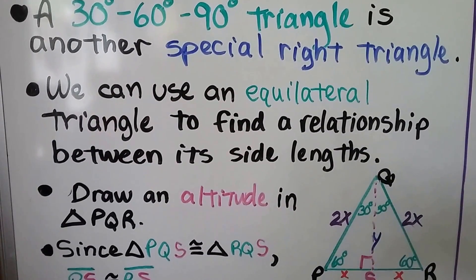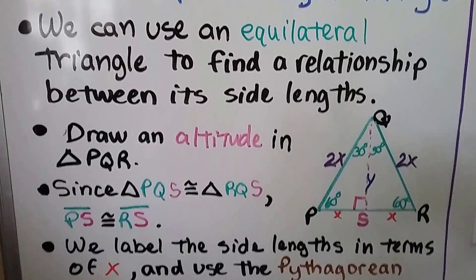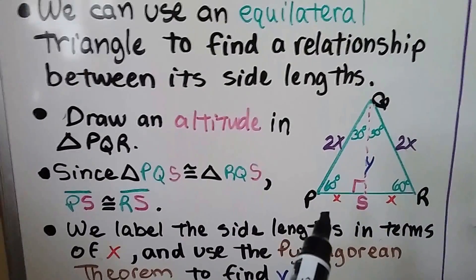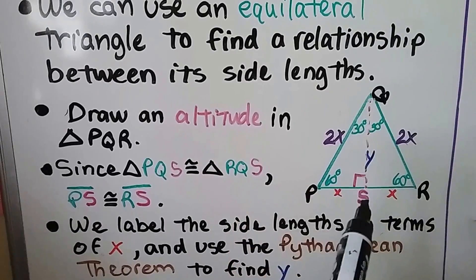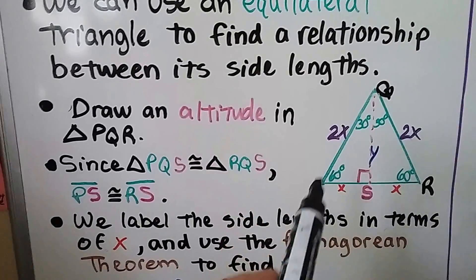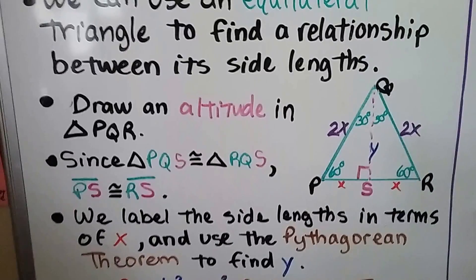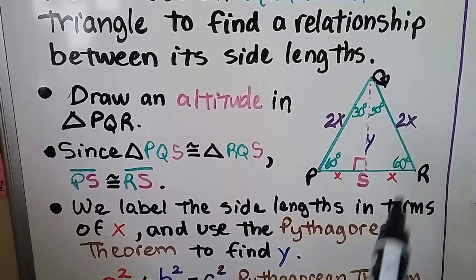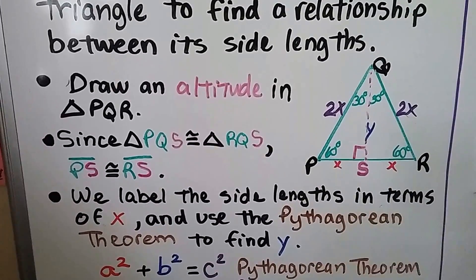We can use an equilateral triangle to find a relationship between its side lengths. What we do is draw in an altitude for the equilateral triangle. That's going to be our longer leg, this is going to be our shorter leg, and that's going to be our hypotenuse. And since triangle PQS is congruent to triangle RQS, then PS is congruent to RS.